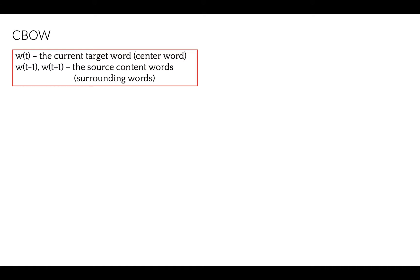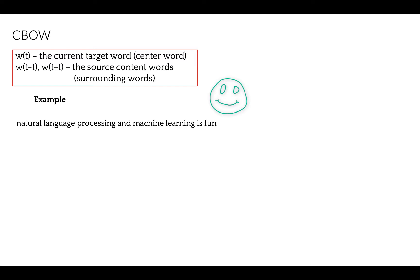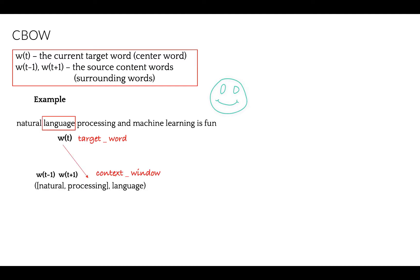Let's discuss the Continuous Bag of Words method. In this method, we predict the current target word — the central word — based on the surrounding source context words. Consider the simple sentence: 'Natural language processing and machine learning is fun.' We have pairs of context window and target word. With a context window of size 2, we'll have examples such as 'natural, processing' for the target 'language.' The model tries to predict the target word based on the context window words.